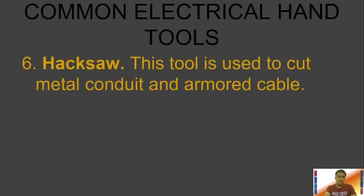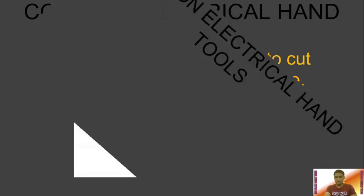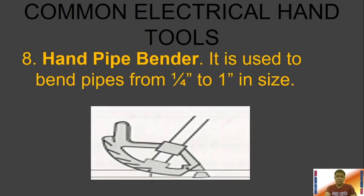Next we have the Hacksaw. This tool is used to cut metal conduit and armored cable. Then we have the hand pipe bender, used to bend pipes from 1/4 inch to 1-1/2 inch in size. If we are going to bend metallic conduits in which the radius or size is 1/4 to 1 inch, then we use this hand pipe bender.